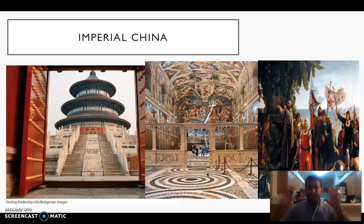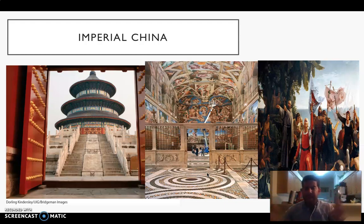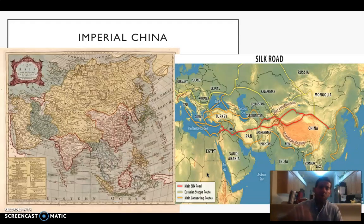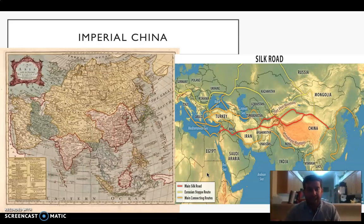Think about these connections. The major theme for today's class and this week's lecture is that there are similarities and differences, and recognizing them is incredibly important. You've got the Russian empire in the north and the Chinese empire building to the south. Looking at this map on the left, you can see how a European saw Asia around the 17th and 18th centuries — big land owned by the Russians, big land owned by the Chinese, and India carved out.